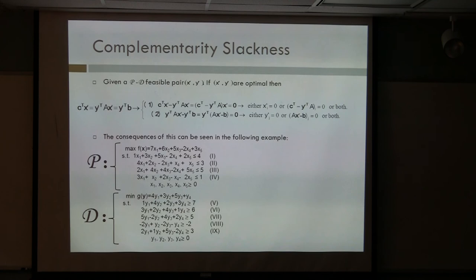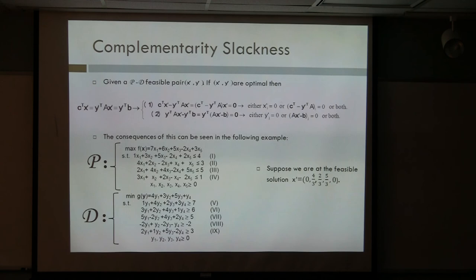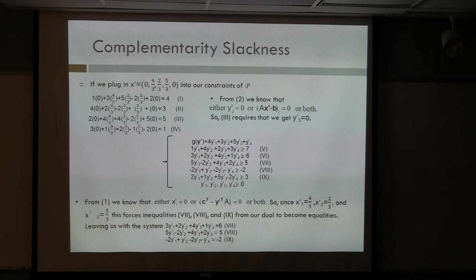Let's look at an example. These are ugly problems, but they're real-world problems that get kind of cool when you zoom out. We have the primal problem here and the dual problem here. I'm not going to do the simplex algorithm for this one. Instead, let's pick a point that's feasible for the primal problem: zero, four thirds, two thirds, five thirds, and zero. If it's optimal, we have a theorem that says it has to satisfy certain conditions. So let's check. If we plug in, we realize this is indeed feasible — it satisfies equations one through four in the primal problem.